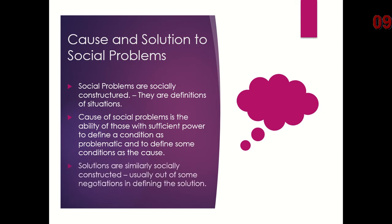As far as social problems, causes and solutions: social problems are usually constructed — they are definitions of situations. The cause is the ability of those with sufficient power to define the condition as problematic and to define some conditions as the cause. What we consider to be a problem is based on what the people in power say is a problem, because if nobody says it's a problem, it's not a problem. Solutions are similarly socially constructed, usually out of some negotiating between peoples in defining the solution.